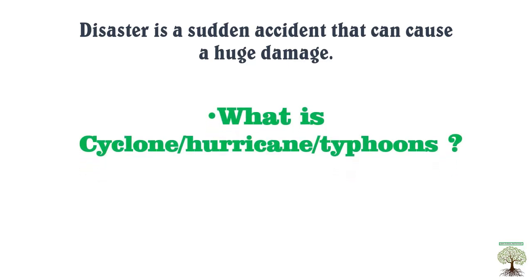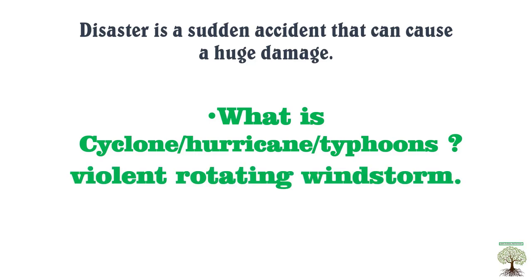Cyclone is a natural disaster. Now, what do cyclone, hurricane, and typhoon mean? They are all basically the same thing — they are given different names depending on where they occur. These are regional terms according to the location. The scientific term for all these storms is 'tropical cyclones.' A cyclone is a violent rotating windstorm.